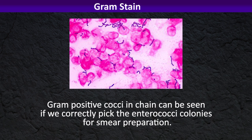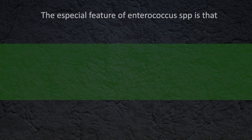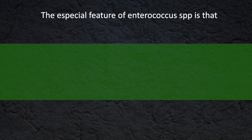Gram-positive cocci in chains can be seen if we correctly pick the Enterococci colonies for smear preparation. Similar to other Streptococcus species, this one is also catalase-negative.